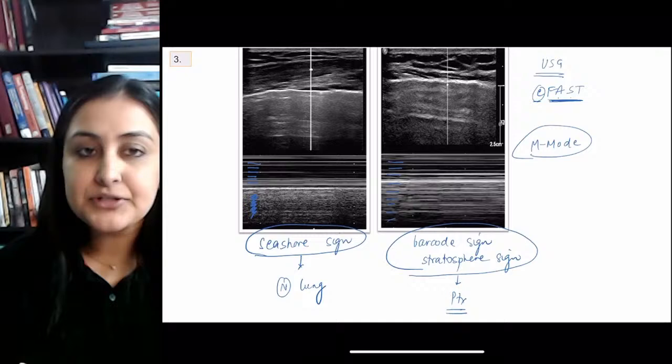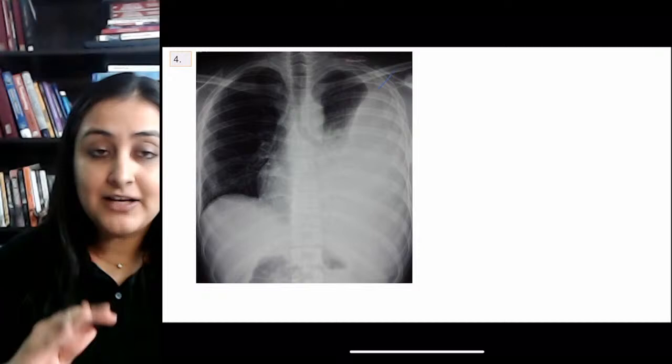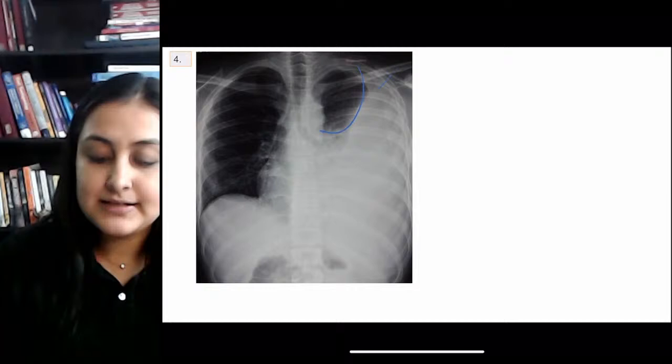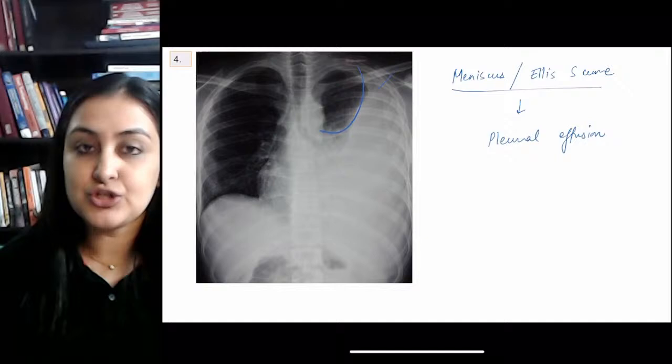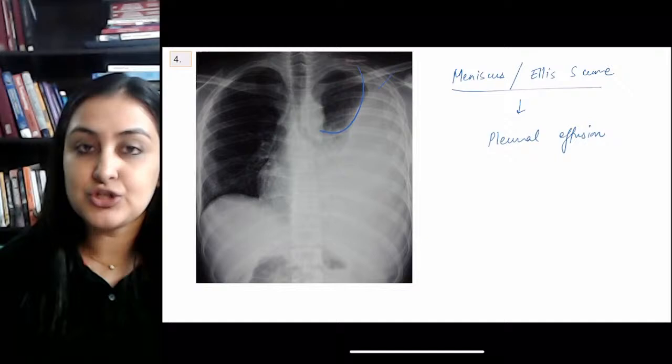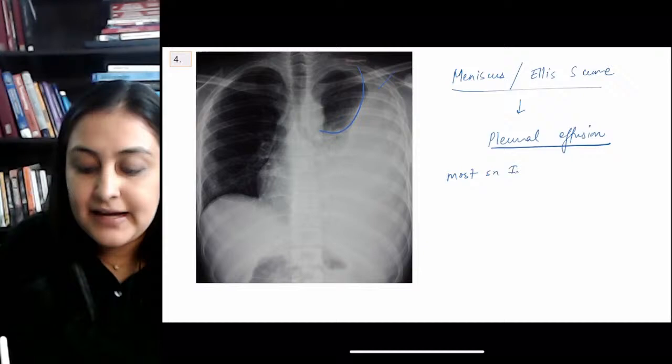Image 3: The abnormal side is the left, showing opacity with a meniscus — a curved shape — indicating fluid. This is the meniscus sign, also called the Ellis S-curve, seen in pleural effusion. If this is from trauma, call it hemothorax. For hydropneumothorax, you would see a flat air-fluid level, not this meniscus. The most sensitive investigation for any fluid — pleural effusion, pericardial effusion, ascites — is ultrasound.